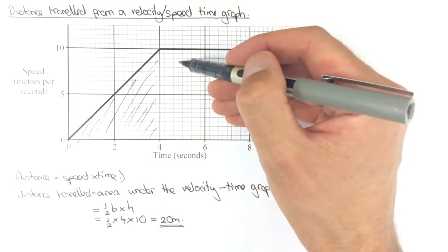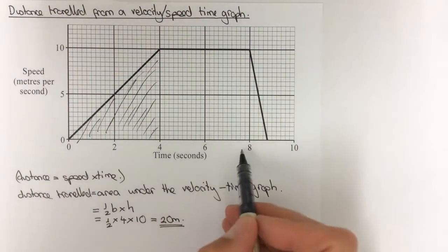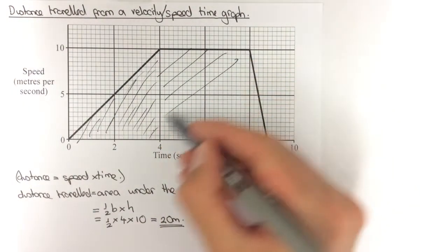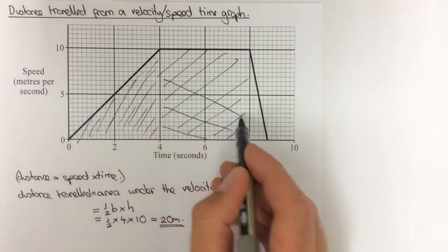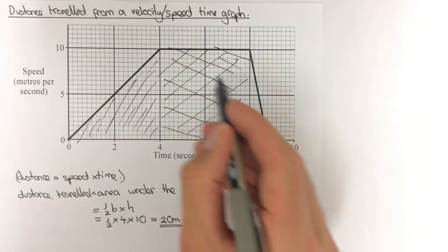If we wanted to work out the distance travelled in the next four seconds, then we'd be trying to find the area of this rectangle here.